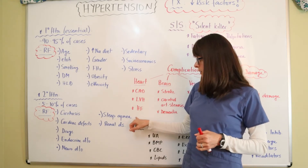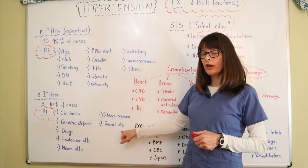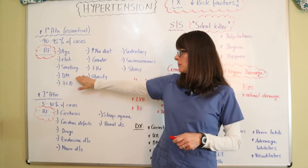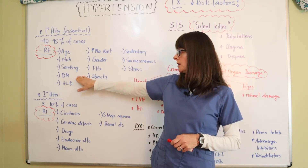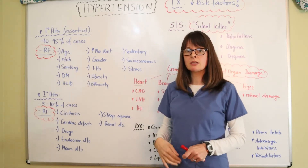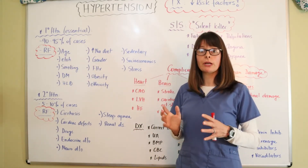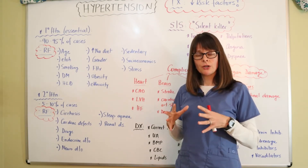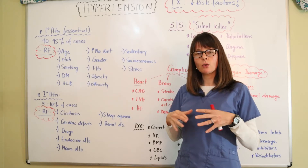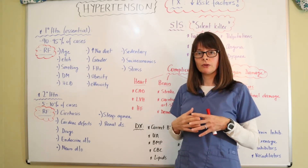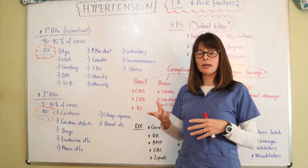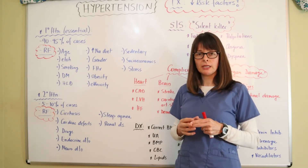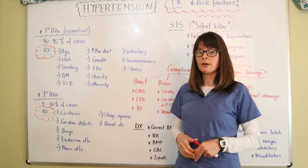Sleep apnea is also a big risk factor for secondary hypertension. Renal disease — specifically renal artery stenosis, where the arteries that feed the kidneys become sclerosed and the kidneys don't get perfused properly — can lead to secondary hypertension, as can glomerulonephritis, which is an inflammation of the glomerulus of the kidney.